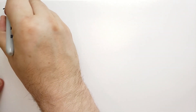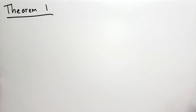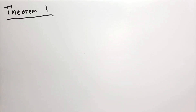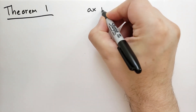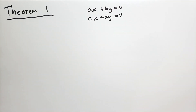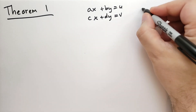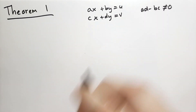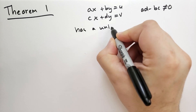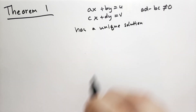Theorem 1. Most linear algebra texts start with a system of linear equations and use matrices to solve it. He takes a different approach — he introduces the determinant first and then shows it's useful. So we have a system: AX + BY = U, and CX + DY = V. Assuming the determinant AD minus BC is not equal to zero, this system of equations has a unique solution — only one value of X and one value of Y will solve the entire system.